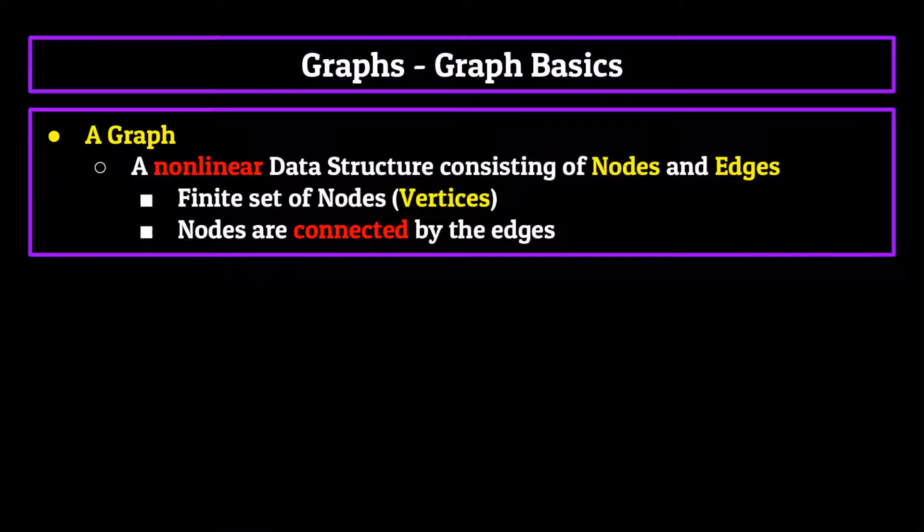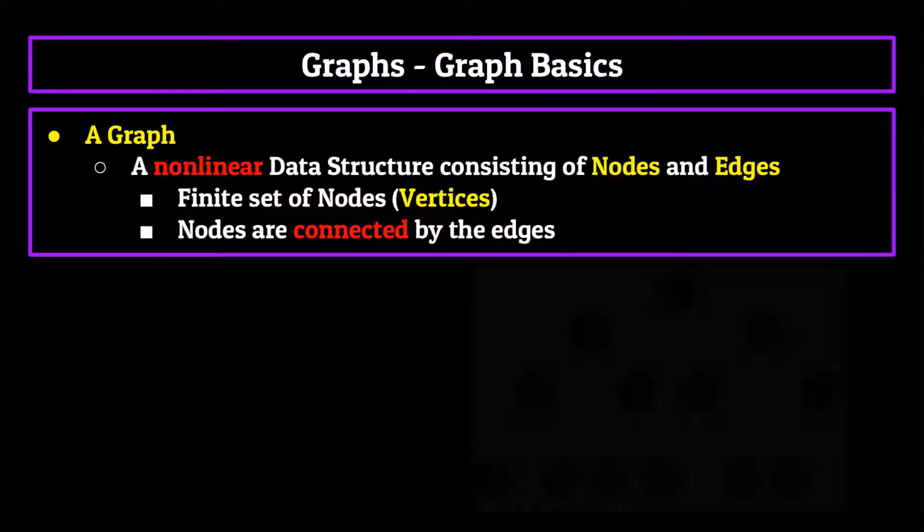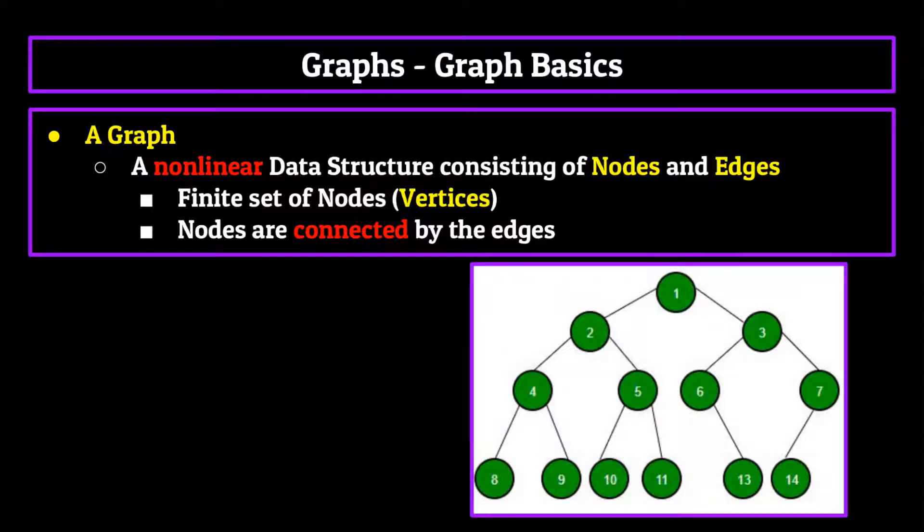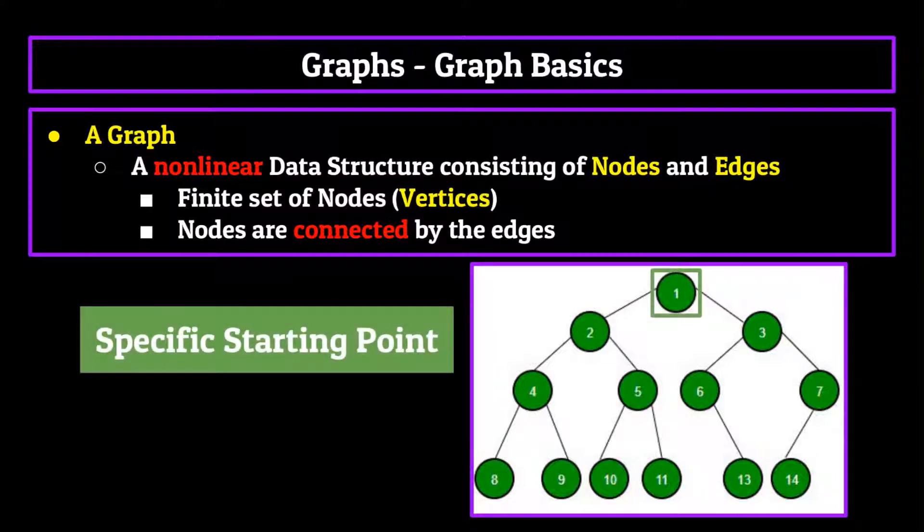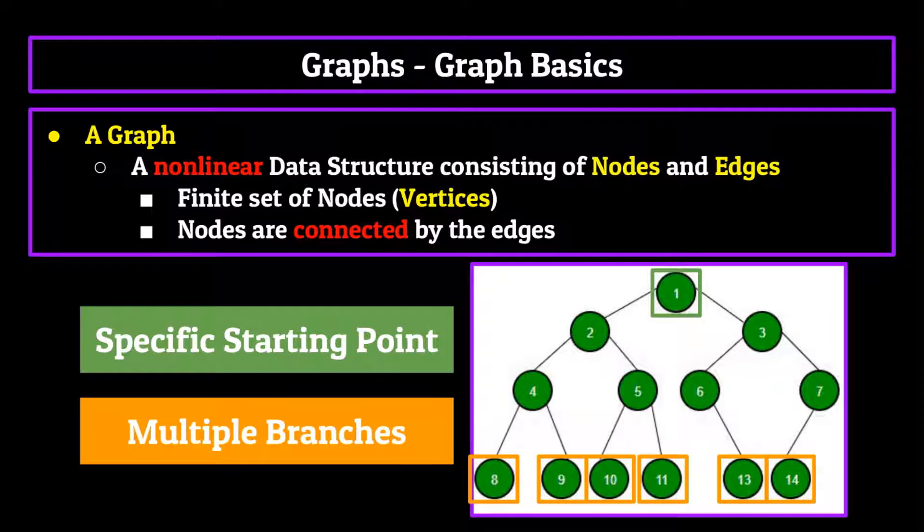Nodes and edges should be familiar to you if you watched the episode on trees. The big difference between trees and graphs, however, is that with the tree, we had a specific starting point. Sure, there were multiple paths down the tree that branched off, but you always had to start at the root node.